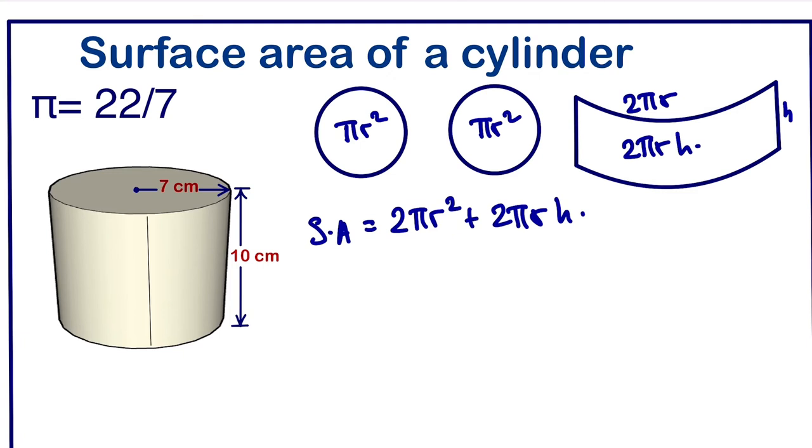We can expand this. 2πr² is the same as r times r plus 2πrh. This is to simplify the formula, so that is going to be easy for you when you do calculations.